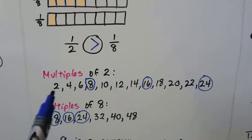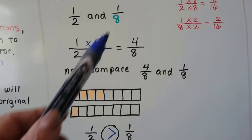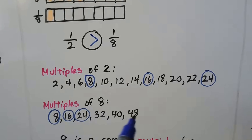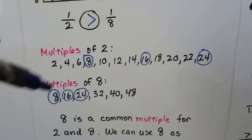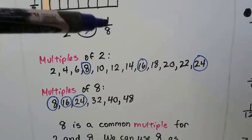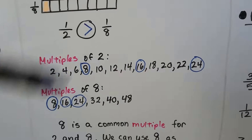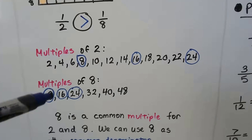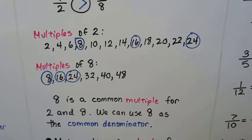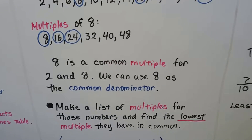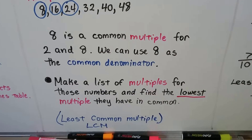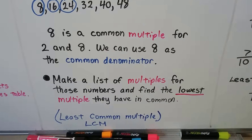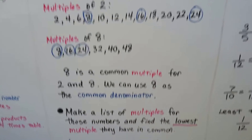To find the best common denominator, list the multiples of both denominators and find the lowest number they have in common. For two and eight: multiples of two are two, four, six, eight, ten, twelve, fourteen, sixteen, eighteen; multiples of eight are eight, sixteen, twenty-four. They both have eight in common — that's the least common multiple. We could have multiplied to get sixteen, but eight is the lowest common multiple, making less work. That's why we choose eight as the common denominator.